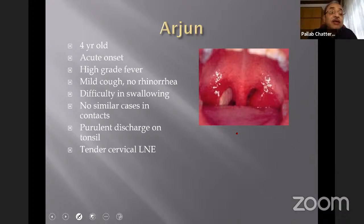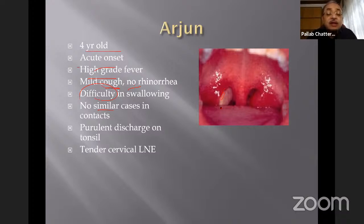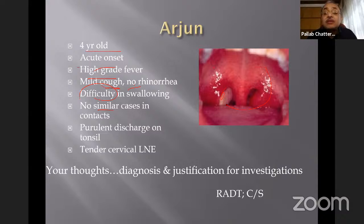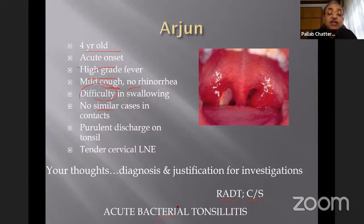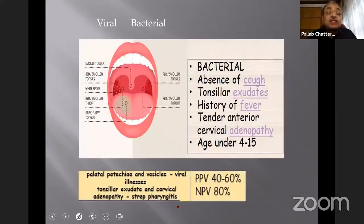Another child of similar age group presented with acute onset of very high-grade fever, mild cough, no rhinorrhea, but difficulty in swallowing. There are no similar cases around. On throat examination, there is purulent discharge, tender cervical lymphadenopathy, and a very angry-looking red throat. The previous child had two systems involved and history of contact; this child doesn't. So we think of a bacterial infection.